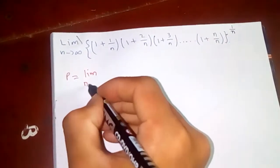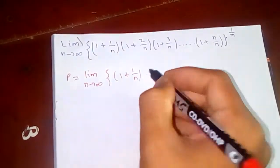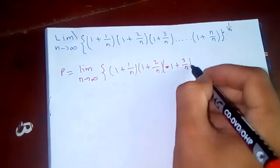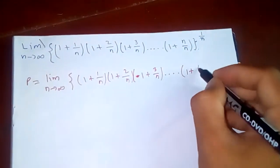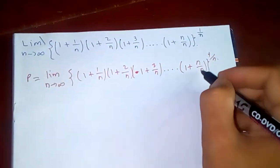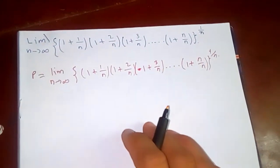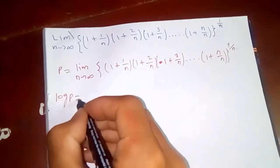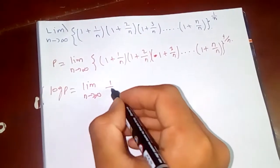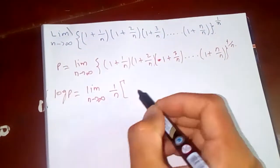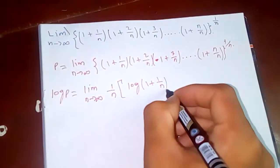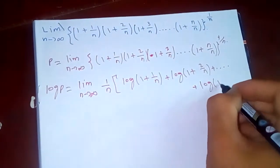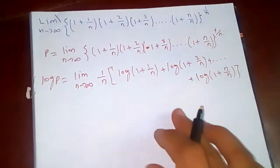Let P equal to the limit. We need to take log, so log P is equal to the limit as n tends to infinity of one by n, and the log of the product becomes a summation: log of one plus one by n, plus log of one plus two by n, and so on up to log of one plus n by n.